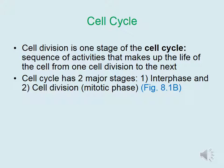Cell division is one stage of the cell cycle. The cell cycle is a sequence of activities that makes up the life of the cell from one cell division to the next. The cell cycle has two major stages: interphase and cell division, which is also known as the mitotic phase.